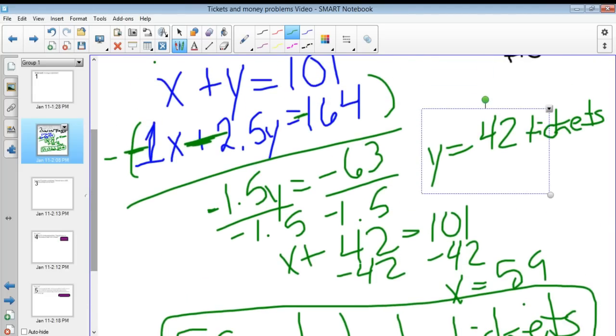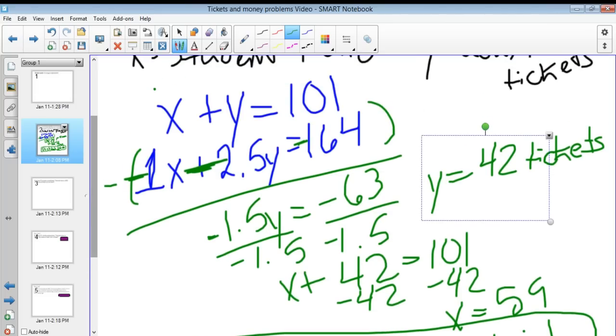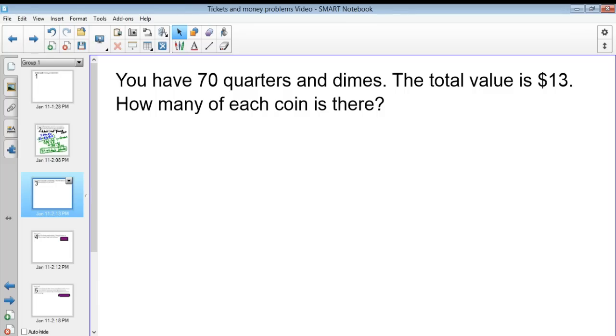You could have solved this in many different ways. You could have solved for X very easily and used substitution. Depends on however you want to solve it. Next, you have 70 quarters and dimes. The total value is $13. How many of each coin is there?